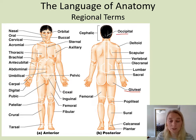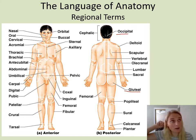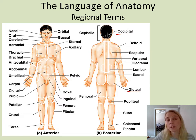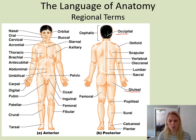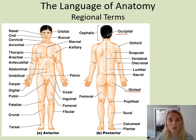Occipital means back of the head — right here. We have a lobe of our brain called the occipital lobe. So when you get to the nervous system, you're not going to be learning occipital lobe brand new. You're going to know that occipital means the back of the skull, so when labeling a picture of the brain, you'll know where that occipital lobe goes.